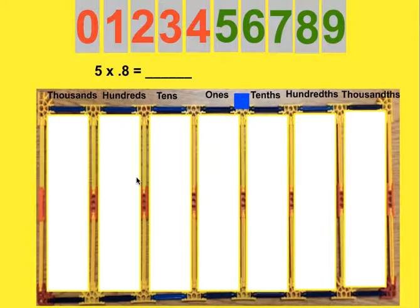We're going to look at the relationships between factors and products and using the base 10 system to determine products or a missing factor. And the problem that's displayed here, 5 times 0.8.